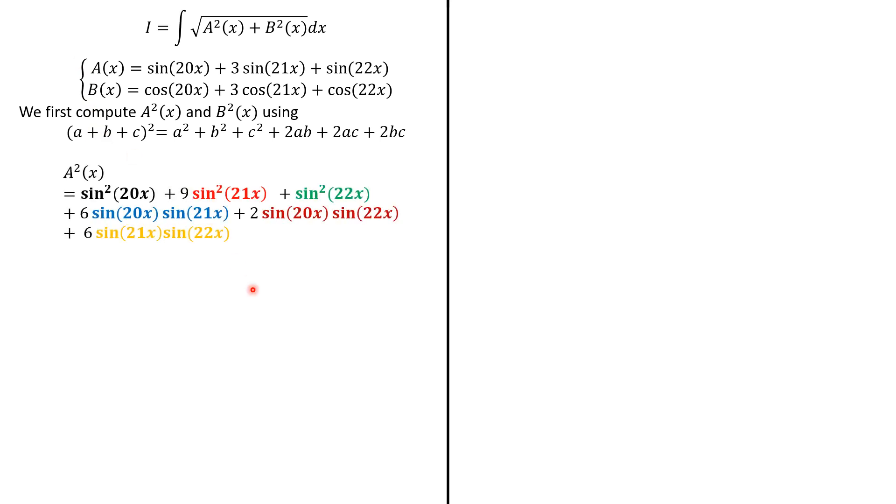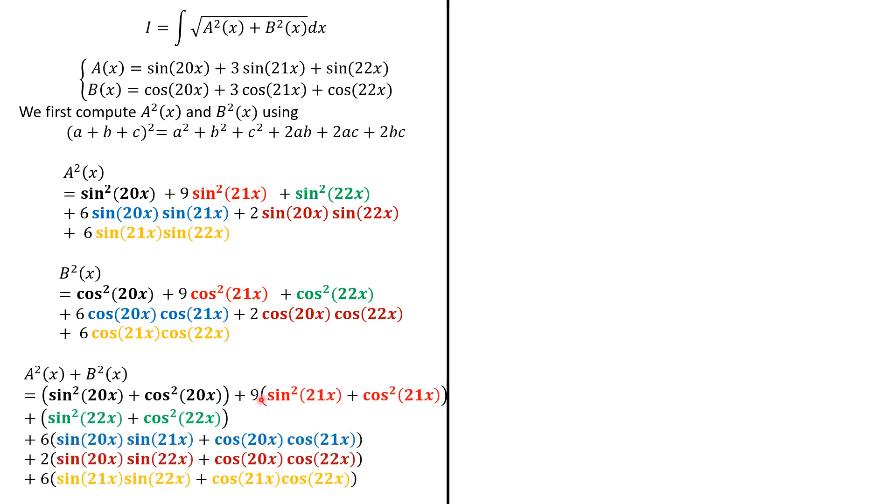So, for A, we have this. Actually, we use a is sin(20x), b is 3sin(21x), and c is sin(22x). To have this, we do the same for B squared to have this. Now, notice that we're going to group the terms within the same column to have this for A² plus B².